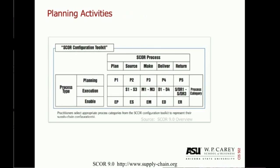Additionally, you've got to understand how to plan for all of these activities. Planning can be identified with P's on all of the models. P2, for example, is the planning activity for your sourcing function — trying to identify how and when you're going to source. Deliver planning would involve aggregating all of the demand so that you know how to execute delivery.